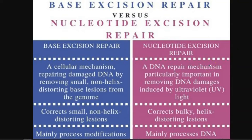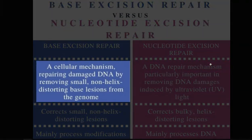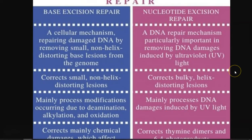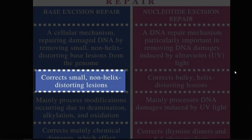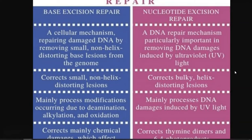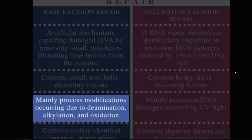Now we look at the differences between base excision repair and nucleotide excision repair. Base excision repair is a cellular mechanism repairing damaged DNA by removal of small non-helix-distorting base lesions from the genome. Whereas nucleotide excision repair is a DNA repair mechanism existing in most organisms, importantly associated with removing DNA damages induced by ultraviolet radiation. Base excision repair corrects small non-helix-distorting lesions, whereas nucleotide excision repair corrects bulky and helix-distorting lesions. Base excision repair mainly processes modifications due to deamination, alkylation, and oxidation.